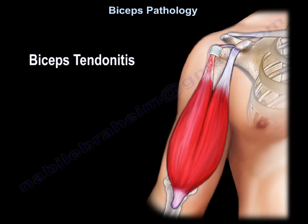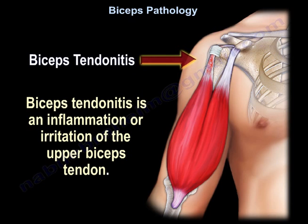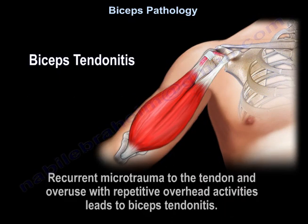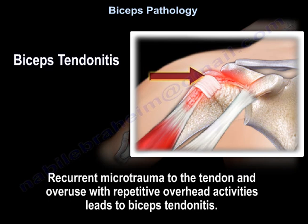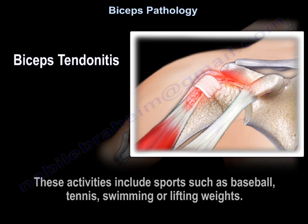Biceps tendonitis is an inflammation or irritation of the upper biceps tendon. It occurs due to microtrauma to the tendon, and overuse and repetitive overhead activities lead to biceps tendonitis. These activities include sports such as baseball, tennis, swimming, or lifting weights.